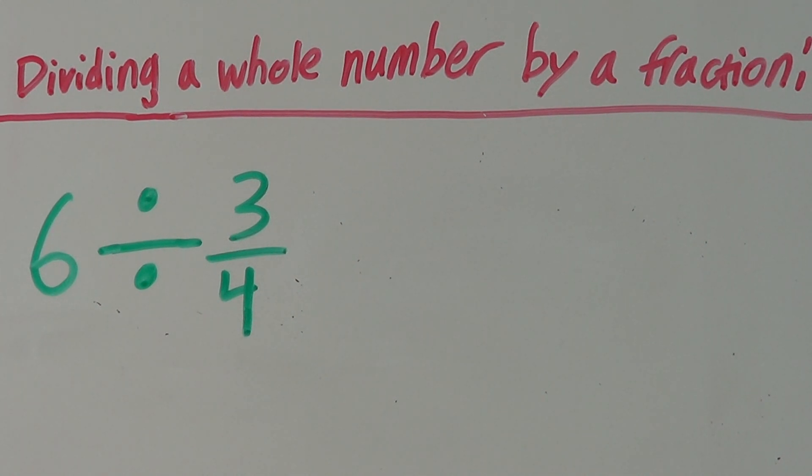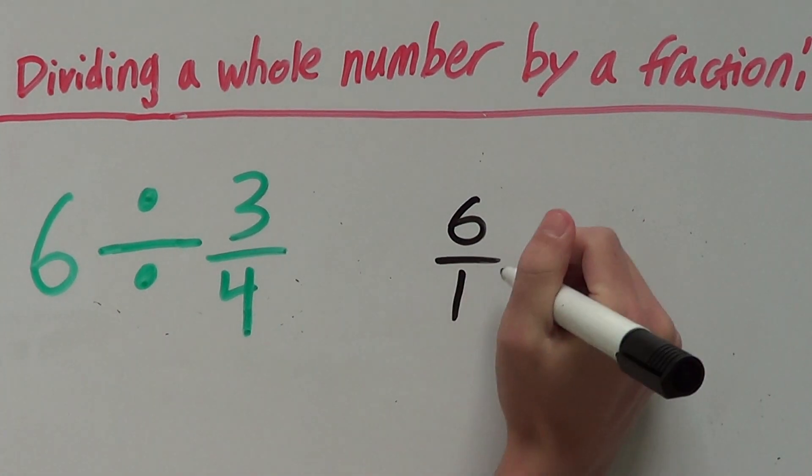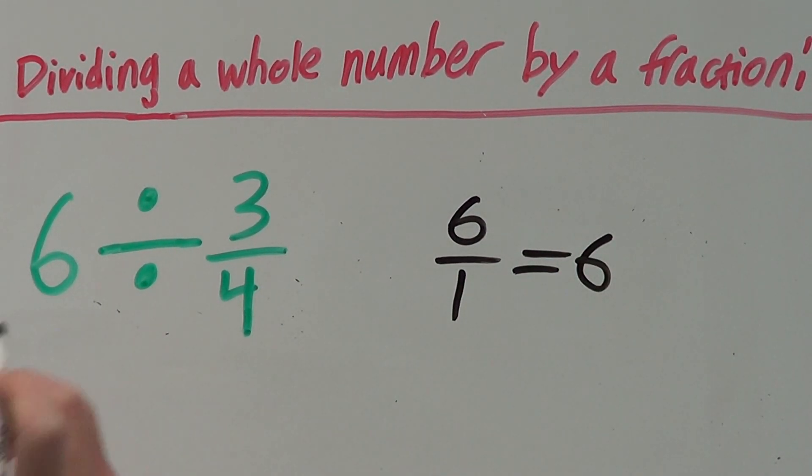So, this 6 can also be a fraction. And that's because 6 over 1 is equal to 6. So we can rewrite this 6 here as 6 over 1 and we're not changing anything. That's still really 6.